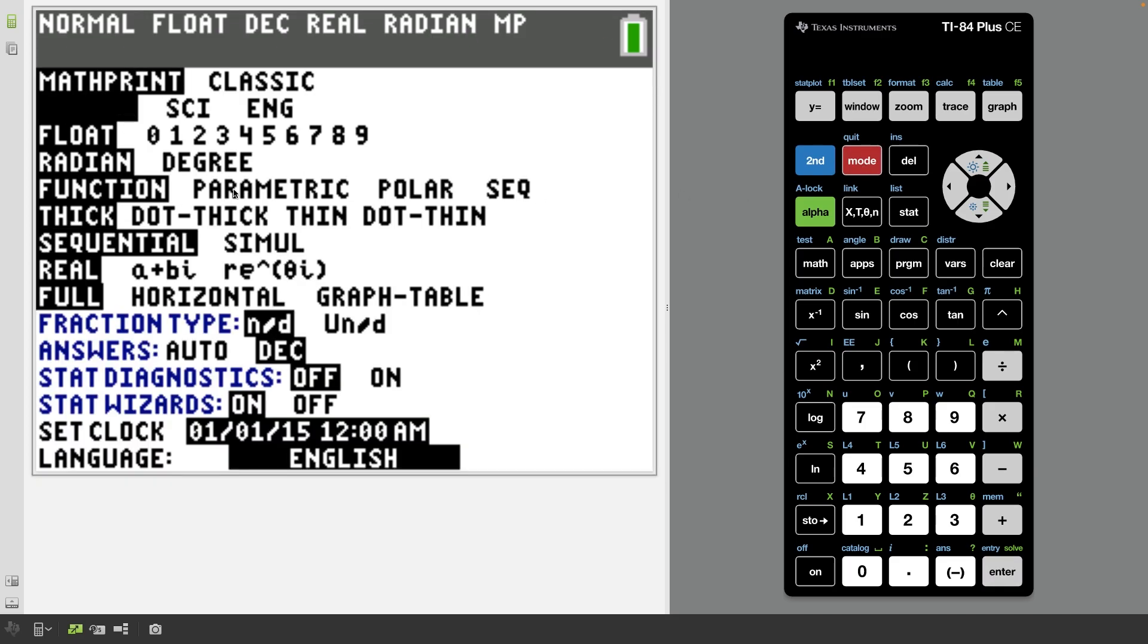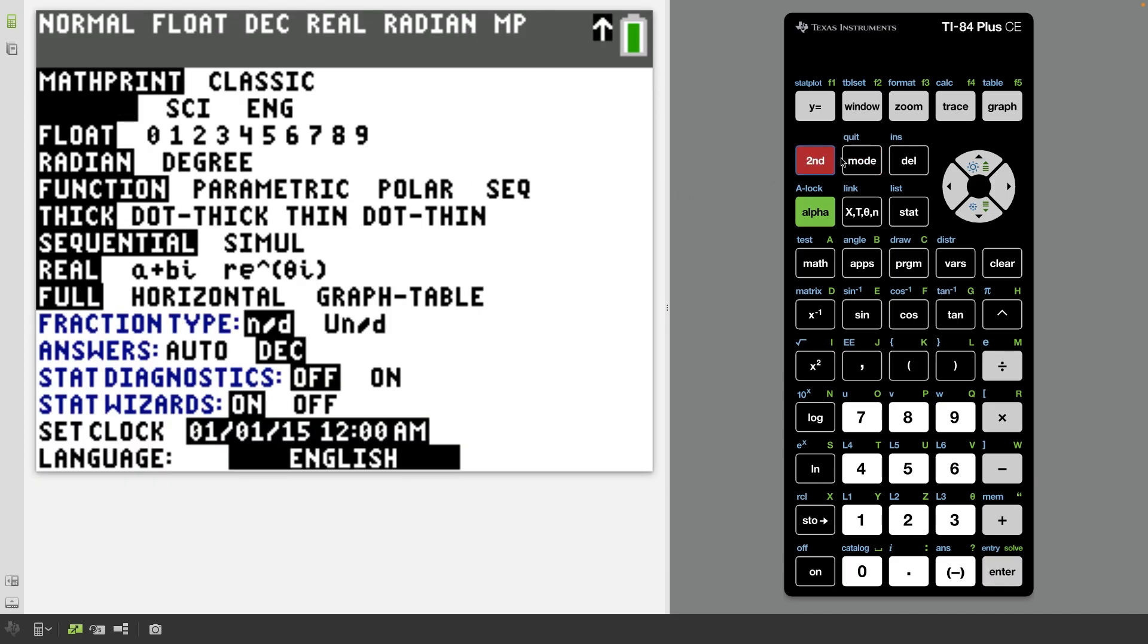And if you need to, switch over to parametric polar if you're taking BC. Know how to navigate the ins and outs of this calculator so that you're not spending any time doing derivatives or integrals by hand.